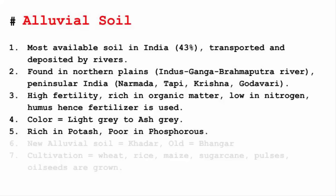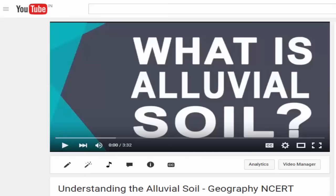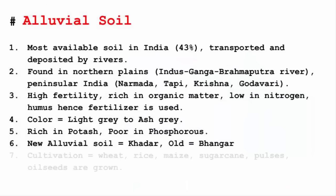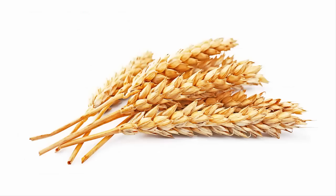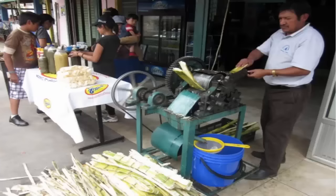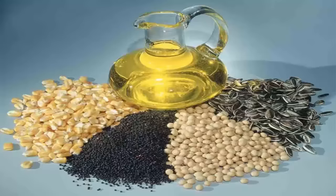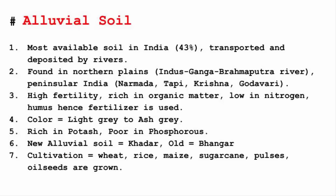Alluvial soil is of two types: new alluvial soil, which is called khadar, and old alluvial soil, which is called bhangar. I have dealt with this in a separate video — please go and watch that if you haven't. The kinds of crops that can be grown in alluvial soil are wheat, rice, maize, sugarcane, pulses, oilseeds, etc.